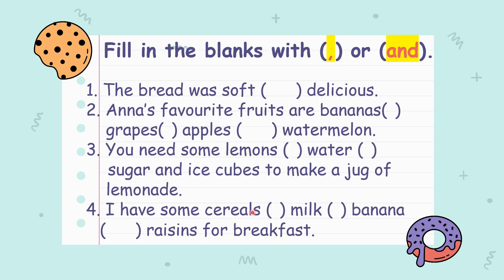So let's try. Number one: the bread was soft, delicious — you're ending the sentence, so you use the word and. Number two: Anna's favorite fruits are bananas, comma, grapes, comma, apples, and watermelon. Number three: he needs some lemons, comma, water, comma, sugar, and ice cubes to make a jug of lemonade. Number four: I have some cereals, comma, milk, comma, banana, and raisins for breakfast.